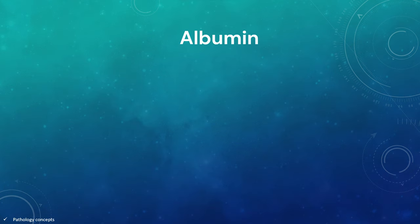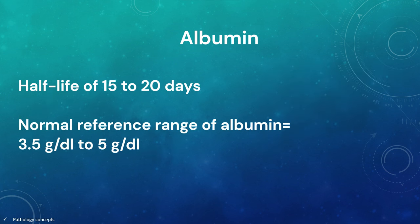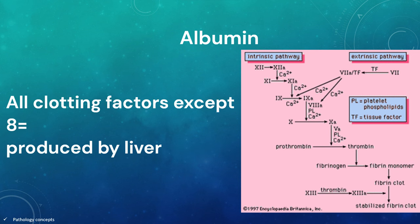Let's learn about albumin. The important protein the liver produces is albumin. Albumin levels provide an idea of liver function and other factors such as nutritional status and nephrotic syndromes. Albumin has a half-life of 15 to 20 days and therefore may not be useful for acute liver dysfunction. The normal reference range of albumin is 3.5 to 5 g/dL. Albumin levels are combined with coagulation studies to provide insight into the liver's functional capacity. All clotting factors except for factor VIII are produced by the liver.